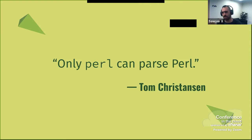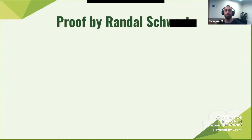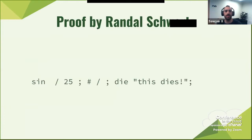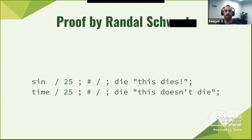Tom basically said the language itself can only be understood by the interpreter we use to run it, and that really sucks because it means nothing else can do it. Here's a proof by Randall Schwartz — it shows two options, 'sin' and 'time', and they give you something divided by 25. One of these will die and one won't, even though they're written exactly the same.